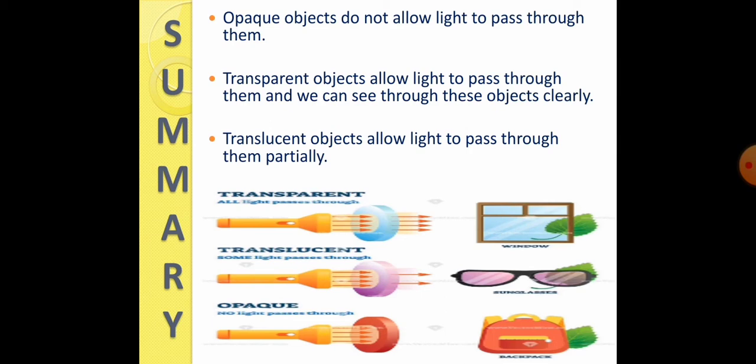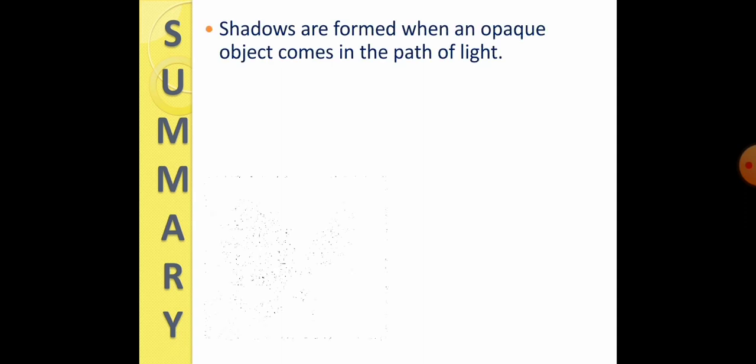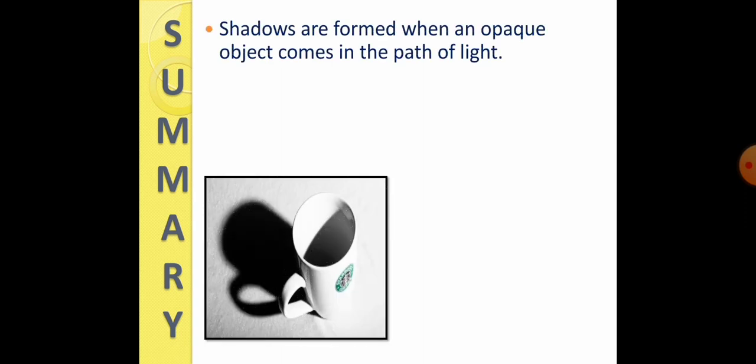Now, next is, shadows are formed when an opaque object comes in the path of light. As you can see in the given picture, when an opaque object obstructs light, or you can say, when an opaque object blocks the light, then a shadow, something like this, will be formed. So, only opaque or translucent objects can form the shadow.